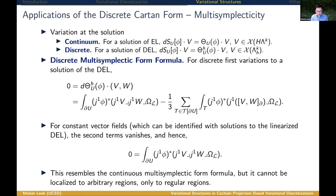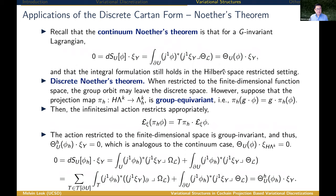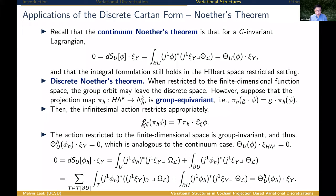One can also use the discrete Cartan form to state a discrete Noether's theorem. The continuum Noether's theorem has a discrete analog given here. For it to apply, the discretization must respect the symmetry generating the associated Noether current. In the context of finite element discretizations, this leads to the notion of group equivariant projection maps — projection maps that commute with the group action in the obvious way. When that holds, the infinitesimal action restricts appropriately, yielding a discrete version of Noether's theorem in the finite element setting.